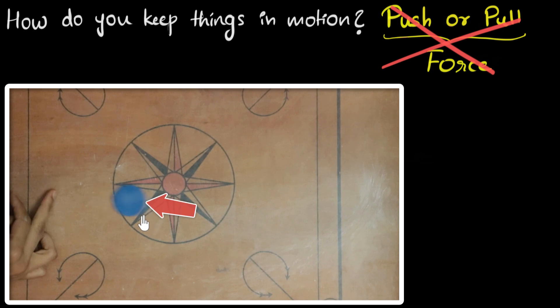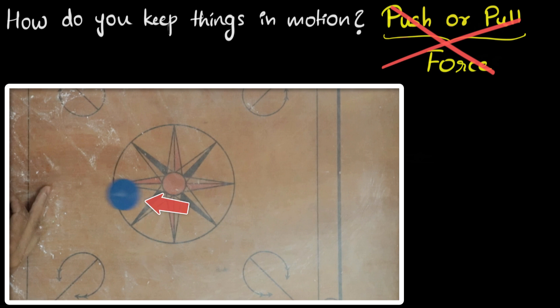Since friction is the culprit for stopping this coin, when we add powder to the surface, the surface gets smoother. And it's the friction that decreases. That's the change. That's the effect of smoothing the surfaces.